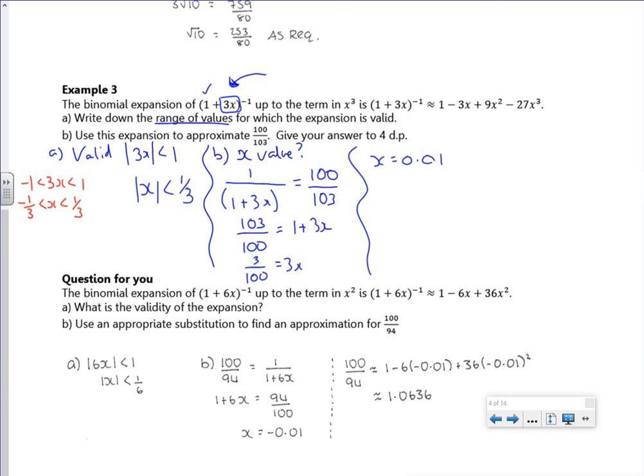So I've just looked at that bit to work out what the x value is. And now for the last part of it, I'm just going to sub in the 0.01 there. So I hope that kind of makes a little bit of sense. So the answer I want is 100 over 103, so I've found the x value I'm going to use to get that.